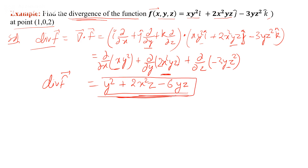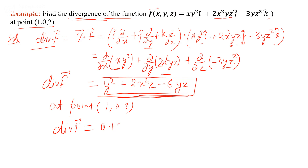Operating the del operator on a vector quantity gives a scalar quantity — this is the divergence. Now evaluating at the given point (1, 0, 2): divergence of f = (0)² + 2(1)²(2) − 6(0)(2) = 0 + 4 − 0 = 4.